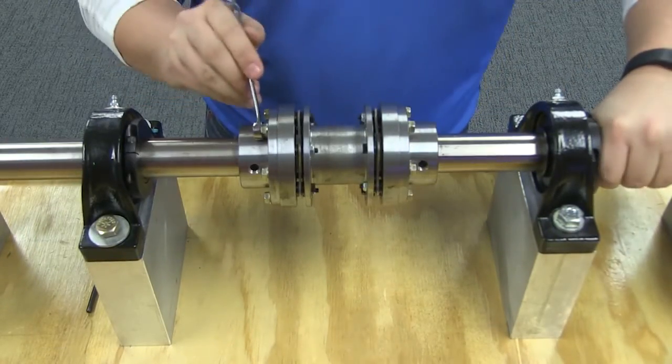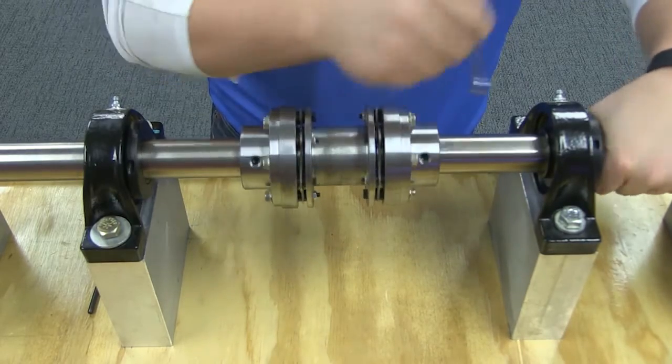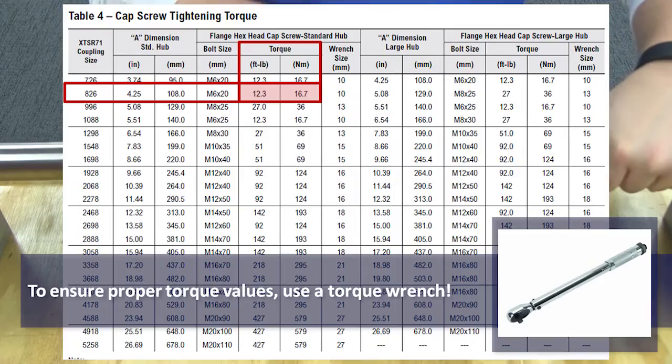Lubricate the cap screw threads and insert the cap screws through the hub flange clearance holes and into the mating threaded holes in the adapter. Tighten each cap screw to the torque as listed in this table.